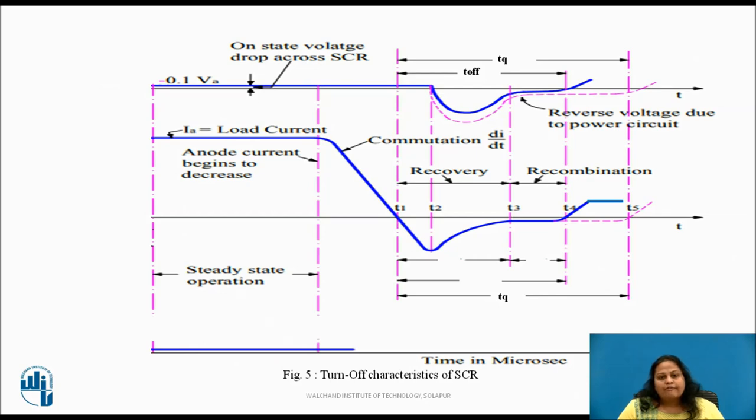Turn-off of an SCR means bringing SCR from conducting state to blocking state. In order to turn-off SCR, two things must be done. First, reduce the anode current below its holding current level and second, apply reverse voltage. Figure shows the waveform of anode voltage across the SCR and the anode current through the SCR.